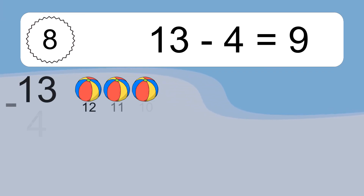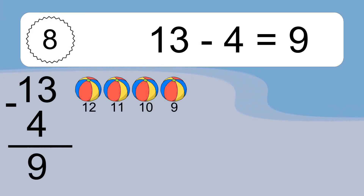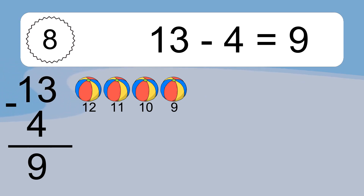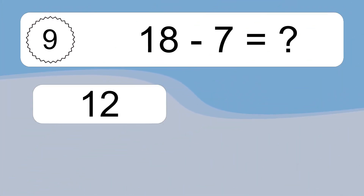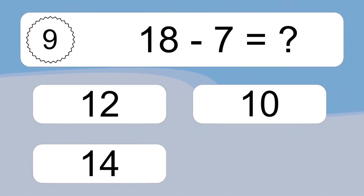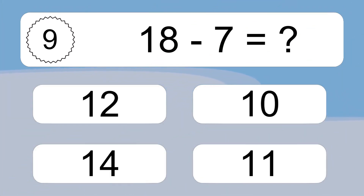13 minus 4 equals what? 13 minus 4 equals 9. Let's count it: 12, 11, 10, 9.